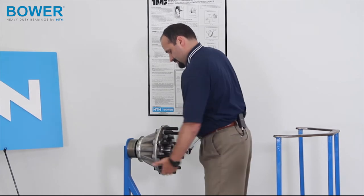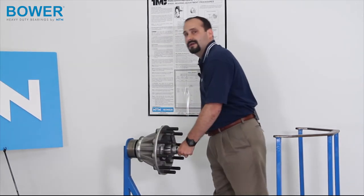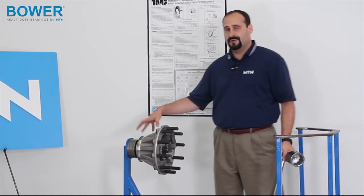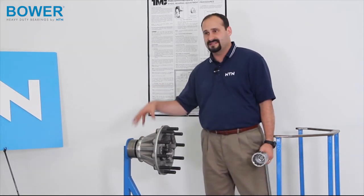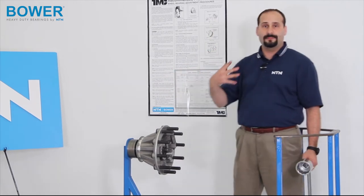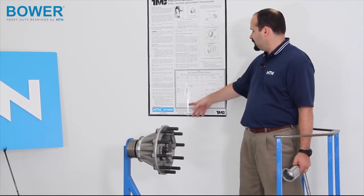So, there's our 50 foot-pounds. Not as much. But again, we're in preload. But this is our final seating set. So, we're set down. Now, we have to do a final back off. We're done with our adjusting nut. And now, we want to back off.